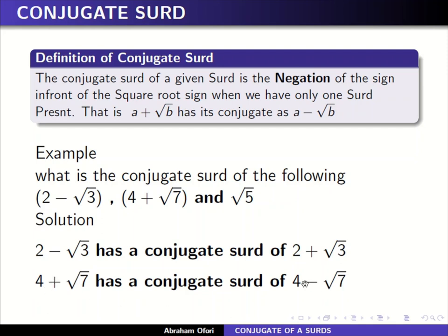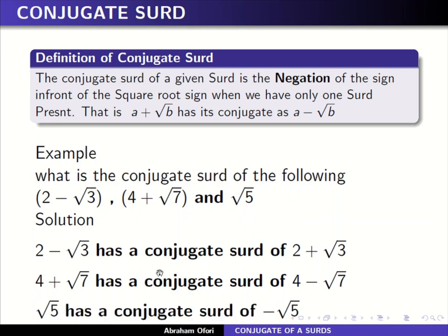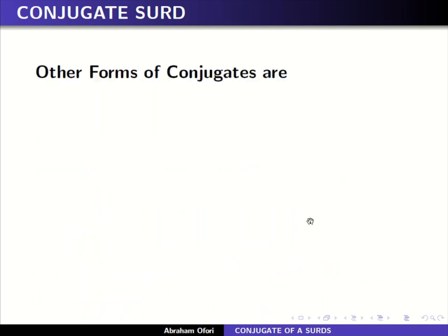Now for square root of five — note that square root of five is the same as zero plus square root of five. So if I change the sign between them, it becomes minus square root of five.